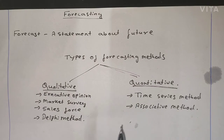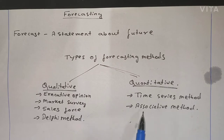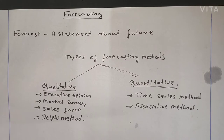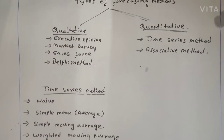The second type is quantitative. In quantitative, there are two types of methods: the first one is the time series method and the second one is the associative method. Time series method is used when the demand is random, cyclical, seasonal, or when there is some trend in the demand. The associative model means you are associating one thing with another to predict the future.